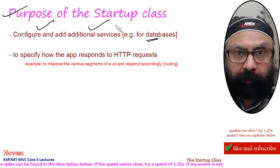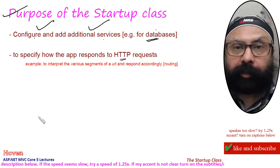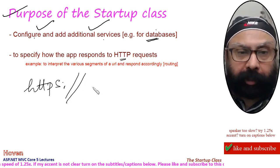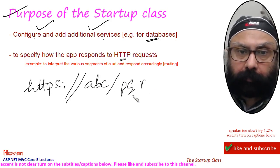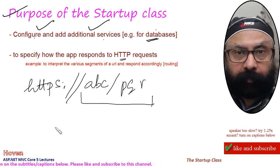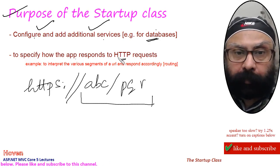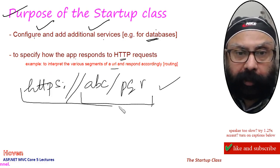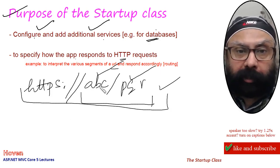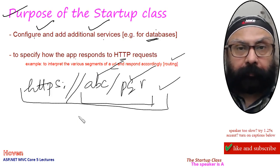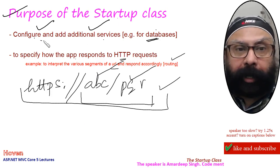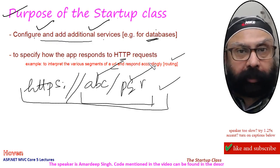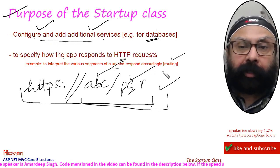The startup class is also a place where you can specify how your app will respond to HTTP requests — the requests typed by the end user in the browser. For example, to interpret the various segments of a URL, how it will respond to those various segments is called routing. So your startup class will help you add and configure services, and also specify how your application will respond to various HTTP requests, such as how routing will take place.